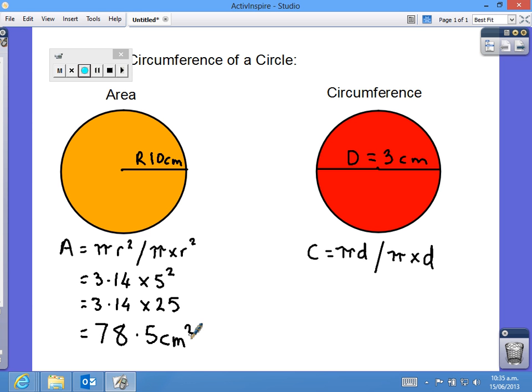Moving right along to the circumference. Circumference is the distance around the outside of the circle. So, we know the numbers.